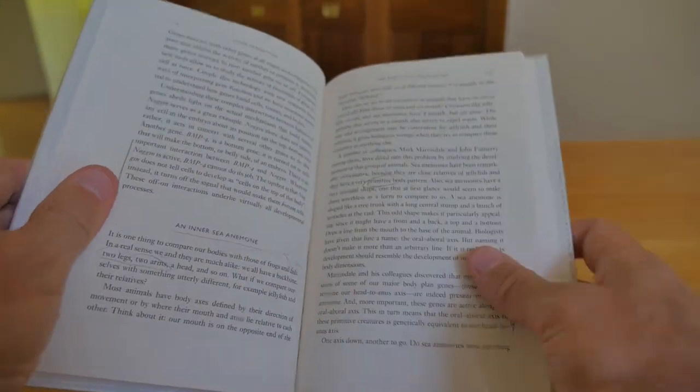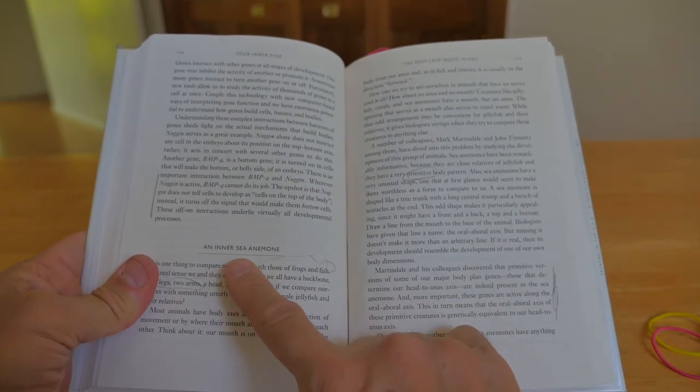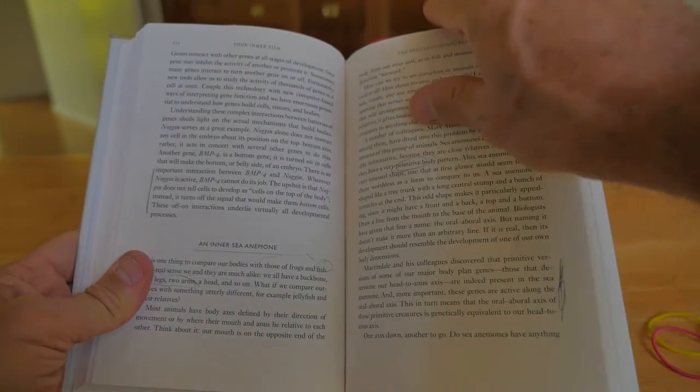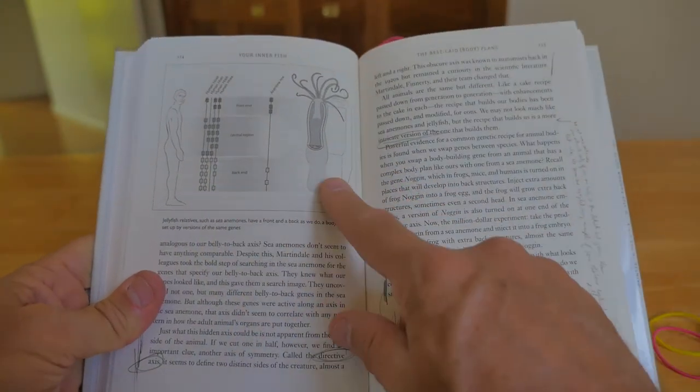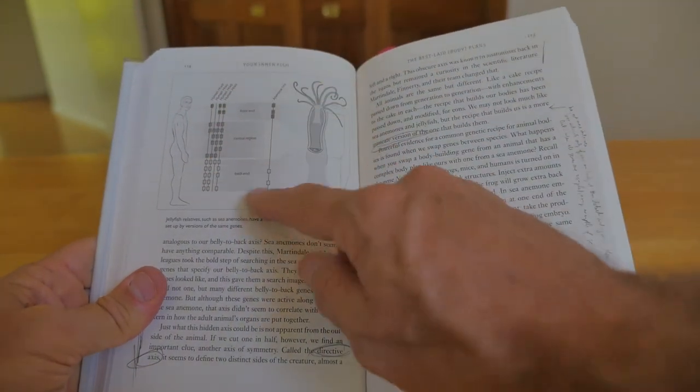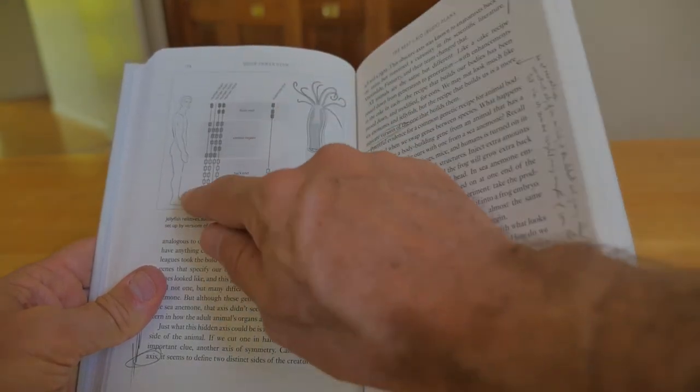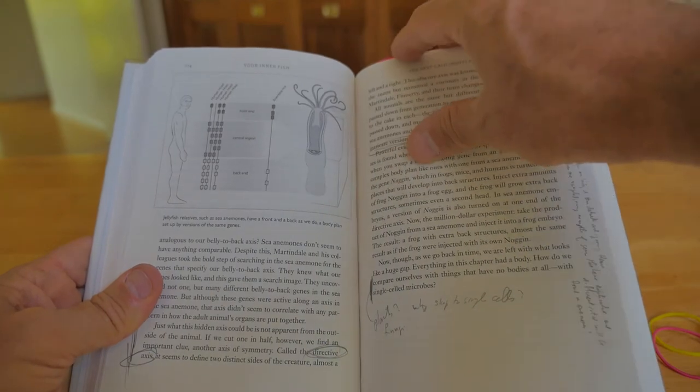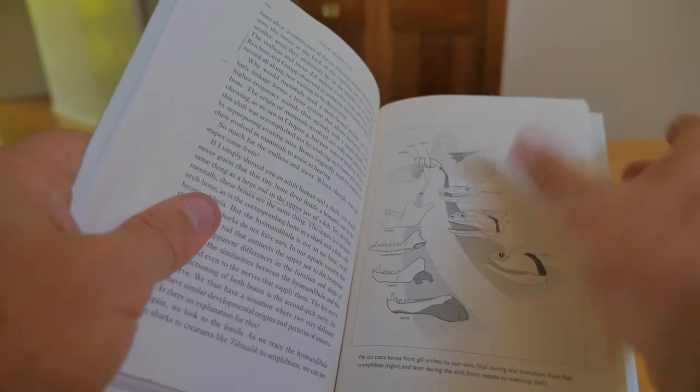Now what else? Oh yeah, now this is called The Inner Fish, but here he has a chapter called An Inner Sea Anemone. Okay, well let's see, oh yeah, here's a human, and here's a sea anemone, and this is a comparison of the genes in the front end, central, and the back end, and apparently there's some homologous genes that can be traced back to sea anemones. That's lovely, we're sea anemone.